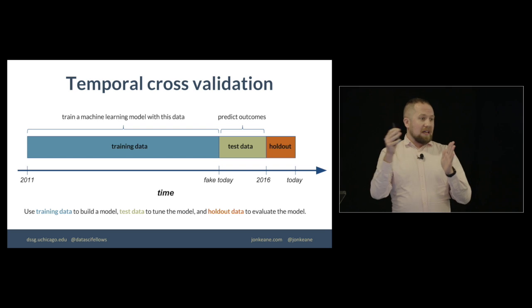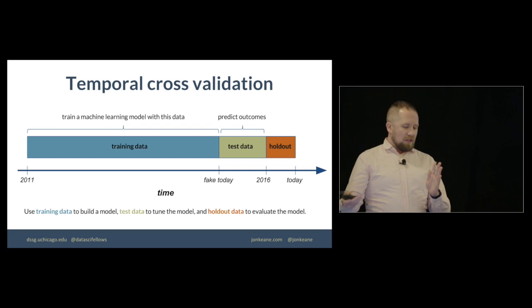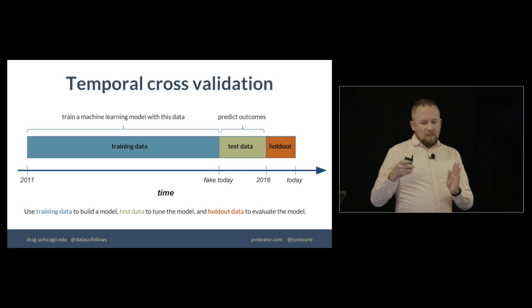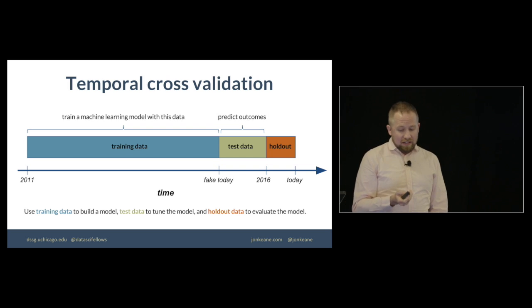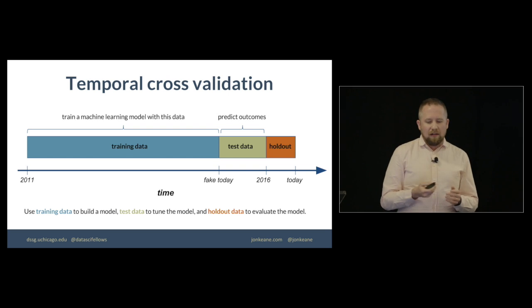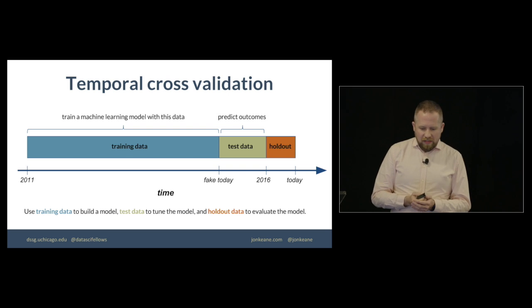So we had our training data, which is where we estimated the parameters of all of these different models. And then we used the test data to tune the model. So the test data was in the next year and the labels including that, as well as all of the features. So we pick our hyperparameters for the models from that. And then finally, we used the holdout set to see how accurate our model actually is. And we did this iteratively as well, but this is just a general breakdown of that.